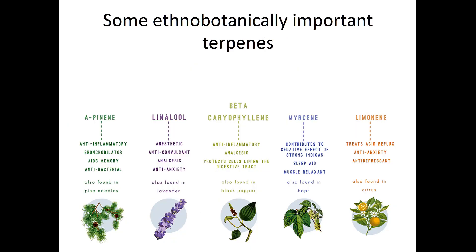Here are some ethnobotanically important terpenes. Alpha-pinene is an anti-inflammatory, aids in memory, and is an antibacterial compound found in pine needles. Linalool is an anesthetic, anti-convulsant analgesic that lowers anxiety, found in lavender plants. There are a whole bunch of these very important ethnobotanically useful terpene compounds.